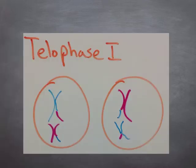Here's what the cells, the final cells, would look like. Notice we started with four chromosomes. Now we only have two in each cell, the haploid number.